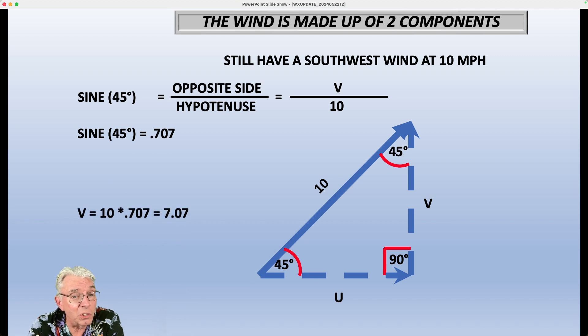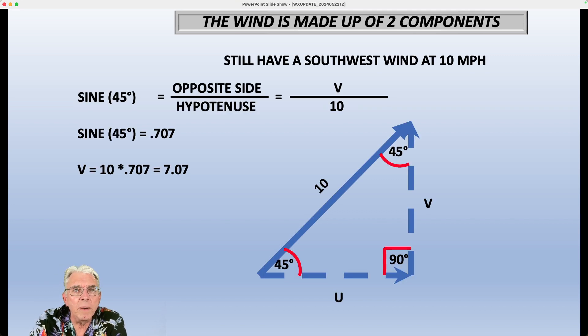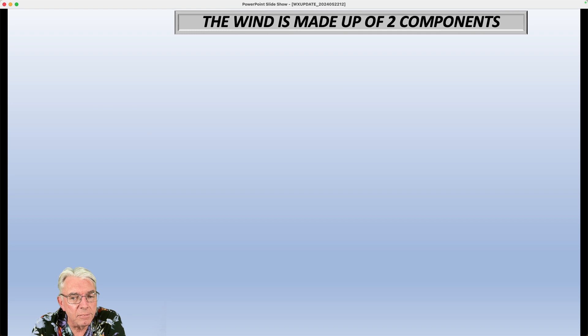Sine of 45 is also 0.707. I tried to make it as easy as I could here. And so, again, you multiply both sides of the equation by 10 and you end, oh, let me go back here. Okay. So then you get 10 times 0.707 or 7.07. So both the U and the V components are 7.07. They're identical.